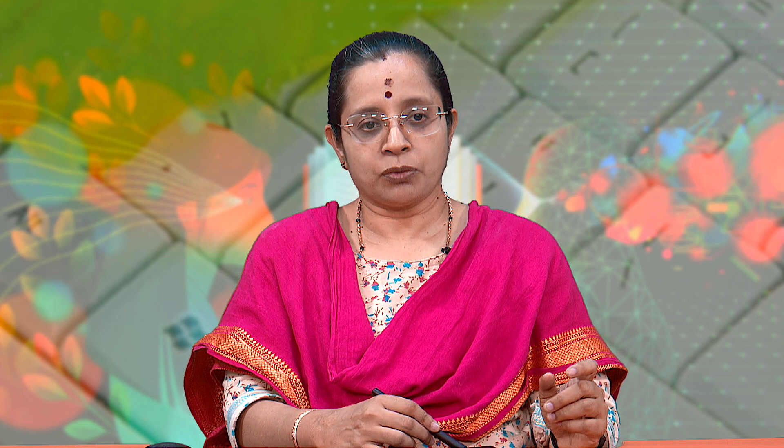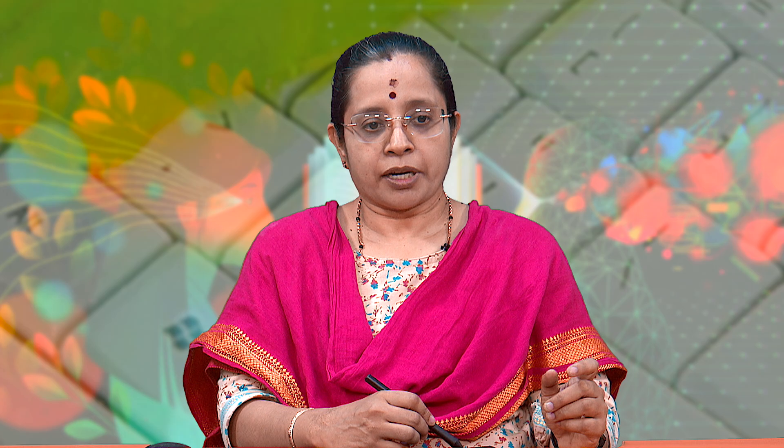The first is the simple reflex agent. There are sensors that perceive something from the environment, and based on the sensors it processes information — typically in the form of if-then rules. Based on these rules, actions are given back to the environment. An example we saw is the thermostat.